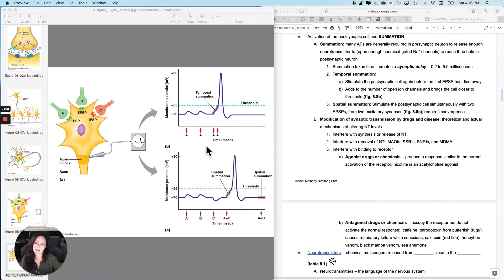But what if instead I stimulated A more frequently over a short time period? What happens is I depolarize and I don't let it repolarize all the way back to resting membrane potential before I stimulate it again. You're adding the depolarization of the first one to the second one, and then you can get an action potential more quickly. This is called summation or temporal summation, temporal as in time. Stimulate the postsynaptic cell again before the first EPSP has died away, and it adds to the number of open ion channels and the depolarization, bringing it closer to threshold.